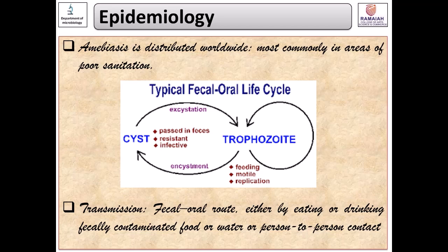Regarding epidemiology, amoebiasis is distributed worldwide, particularly in the tropics and most commonly in areas of poor sanitation. Maintenance of sanitation is one of the major prophylactic measures to control amoebiasis and outbreaks. People at high risk for severe disease include those who are pregnant, immunocompromised, or receiving corticosteroids.